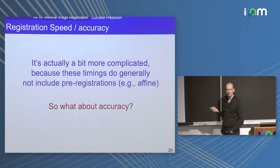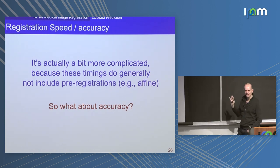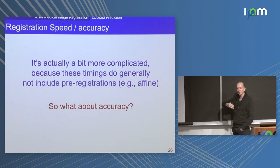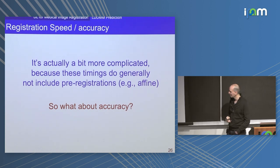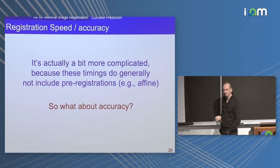Of course, in reality it's a little bit more complicated. The deformable part is now very fast, but your bottleneck may now be affine registration. You can also have models that predict the affine part, so you can do everything fast. These deformable registration models are actually faster than typical affine registration via optimization, so you may need to worry about other parts of your processing pipeline.